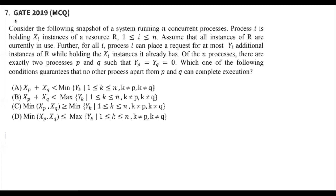This question was asked in GATE 2019 and it's an MCQ type. Consider the following snapshot of a system running N concurrent processes. Process I holds XI instances of resource R, where I ranges from one to N. Assume that all instances of R are currently in use.